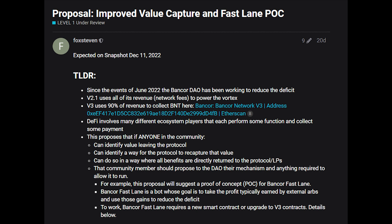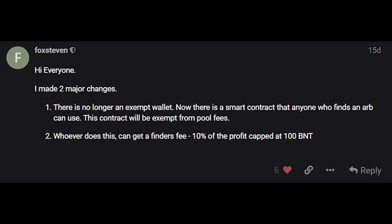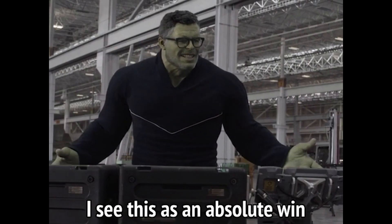This means that the Bancor Fastlane ARB bot would have the ability to do an ARB on trades before other bots could even find it profitable. In the latest iteration of the proposal, the Bancor Fastlane arbitrage bot technically wouldn't be a bot — it would be a smart contract that anyone could trigger. Anyone could place the inputs, pay the gas, and execute the trade, and the smart contract would give them a 10% cut of the profit. The remaining 90% of the earnings would go to buying BNT and reducing the deficit.